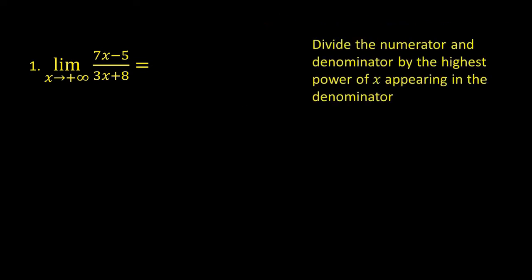We can avoid getting an indeterminate result by dividing the numerator and the denominator by the highest power of x appearing in the denominator. So we divide each term in the numerator as well as each term in the denominator by x.